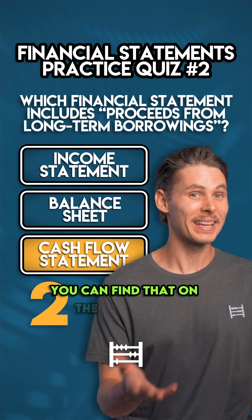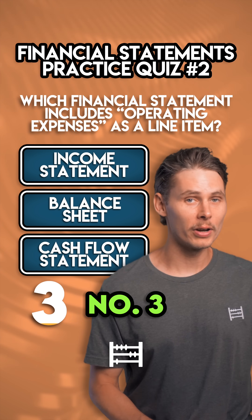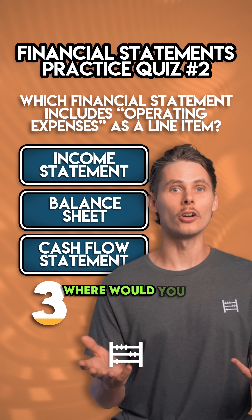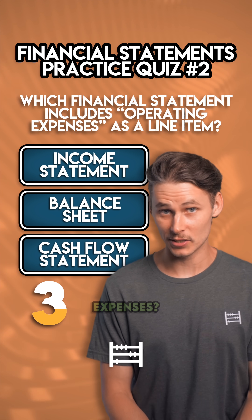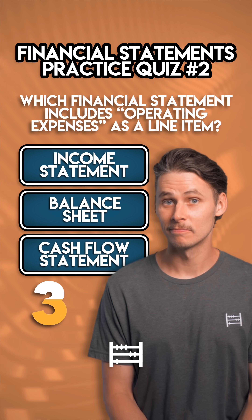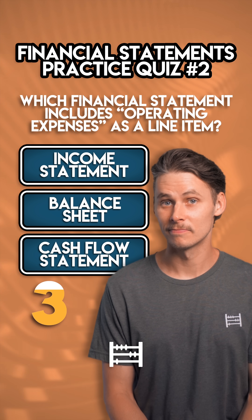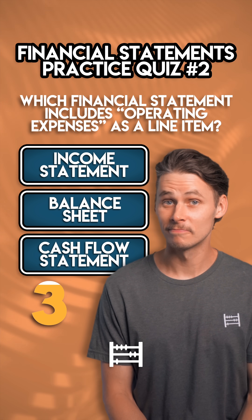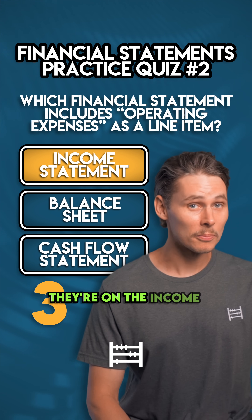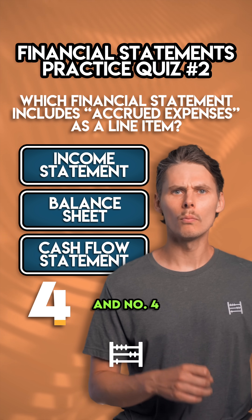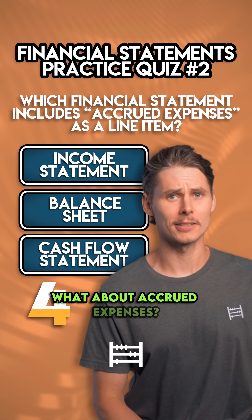You can find that on the cash flow statement. Number three: where would you look for a business's operating expenses? They're on the income statement. And number four: what about accrued expenses?